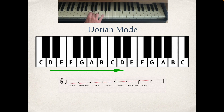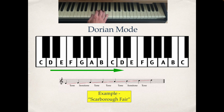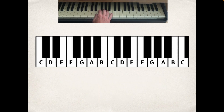The Dorian mode is a really good mode for melody writing, and you'll find lots of examples of it. If you want to hear one, try listening to the folk song 'Scarborough Fair' — that's a very well-known song written in the Dorian mode. Let's repeat the process again — this time we're going to start on E.